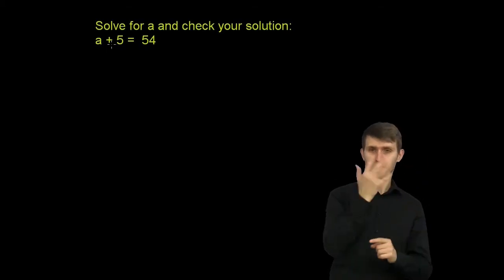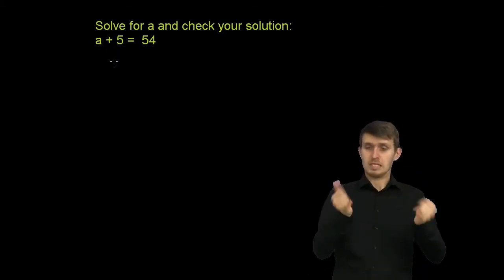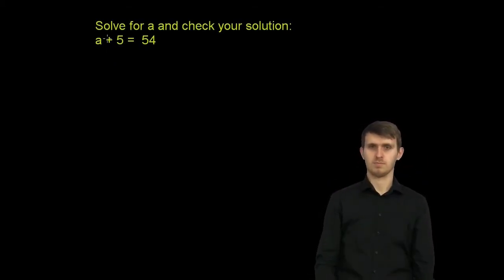Well, the only other thing on the left hand side is this positive 5. Well, the best way to get rid of a plus 5, or of a positive 5, is to subtract 5. So let's subtract 5.